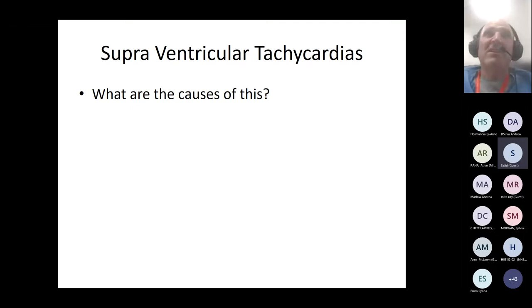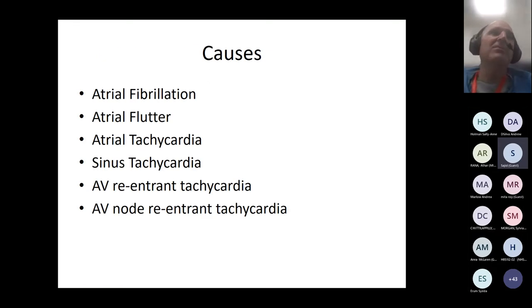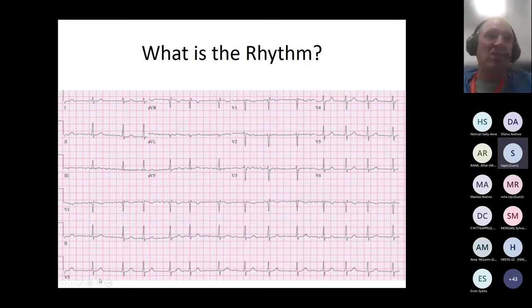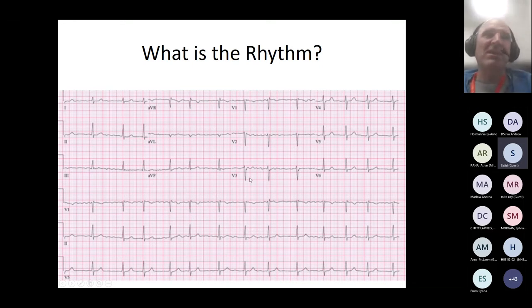What about the fast stuff? Supraventricular tachycardias — a term I don't really like — is a broad term encompassing atrial fibrillation, flutter, atrial tachycardia, sinus tachycardia, AV reentrant tachycardia, and AV nodal reentrant tachycardia. AF is usually straightforward: on the rhythm strip the QRS complexes are irregularly spaced and you'll struggle to see P waves. The irregularity gives it away, and any apparent P-wave-like deflections in AF are just a coarse baseline. This is atrial fibrillation.